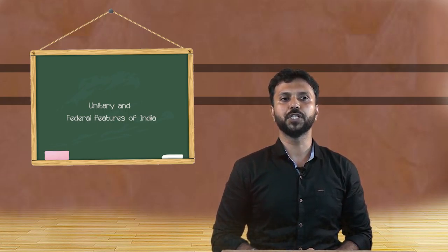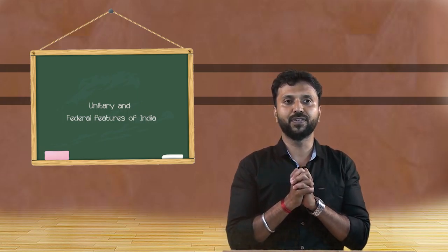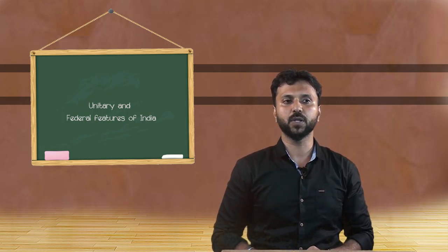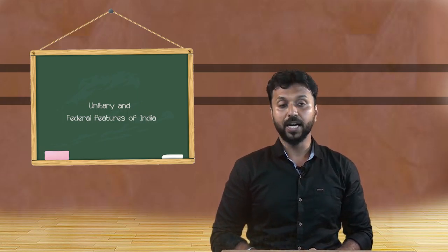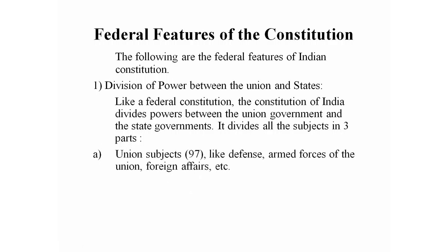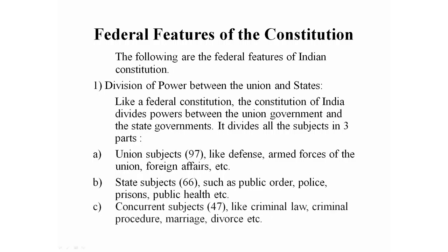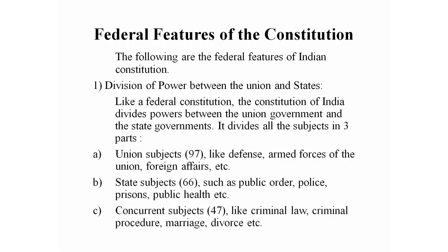Some of the federal features of the Indian constitution include division of powers between the union and states. Like a federal constitution, the constitution of India divides powers between the union government and the state governments. It divides all subjects into three parts: union subjects, state subjects, and concurrent subjects.